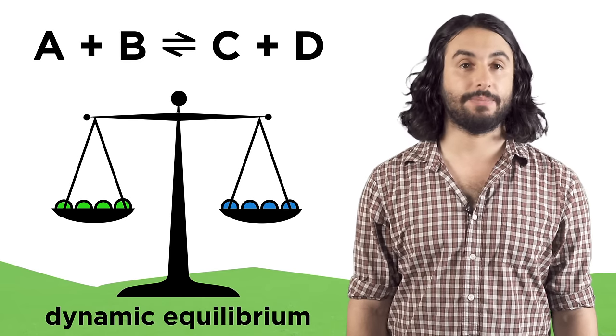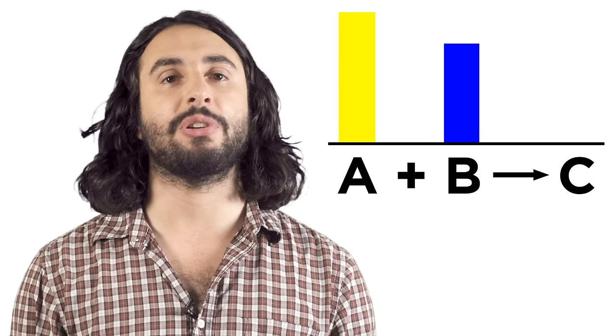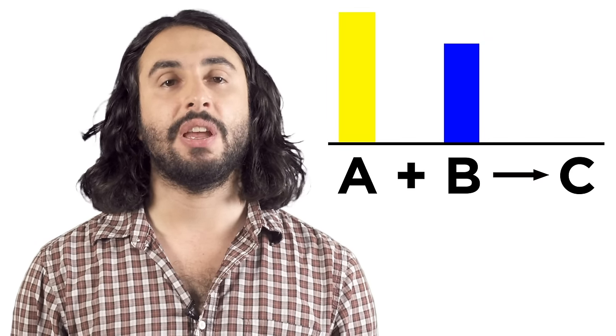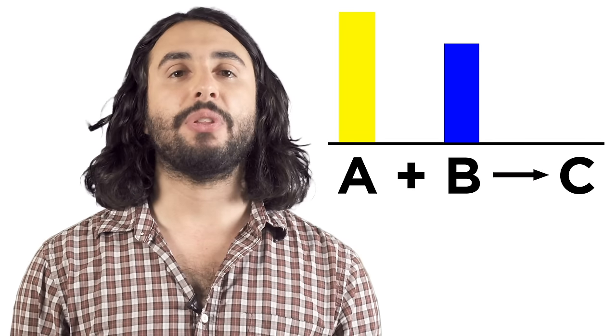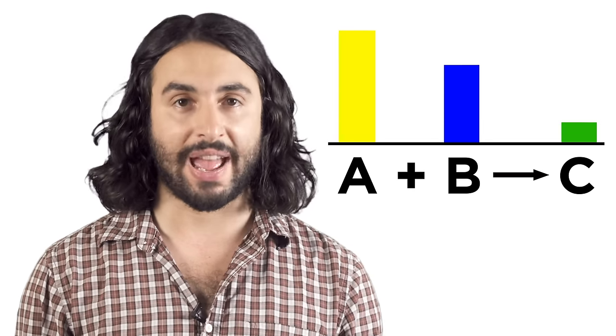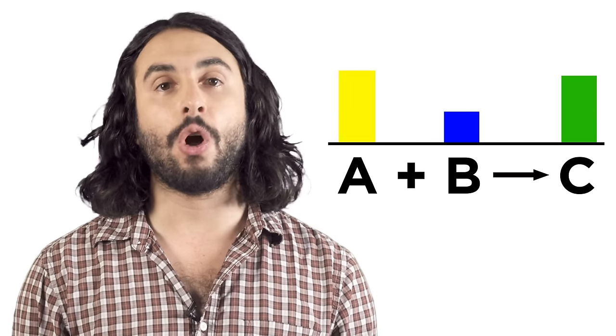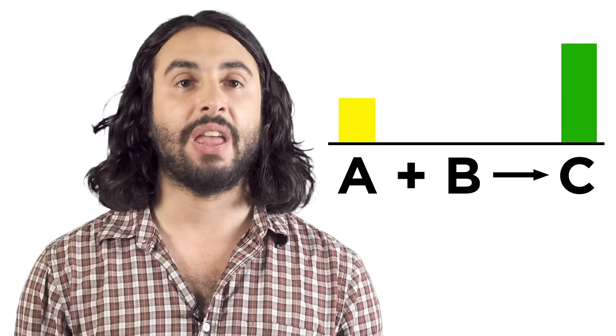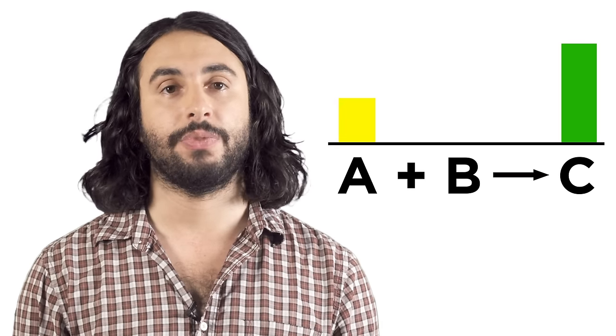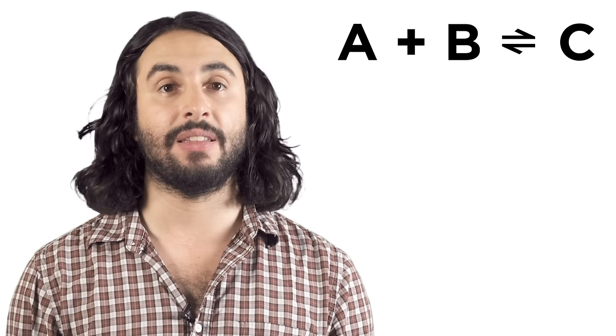We learned how to use stoichiometry to discuss limiting reagents and how much of the products to expect, but these were for unidirectional reactions where we assume that all the reactants make products and then the reaction is over. With equilibria, it's a little more complicated to calculate what the concentrations of each substance will be at equilibrium, so we're going to have to do a little bit of math to be able to describe the system.